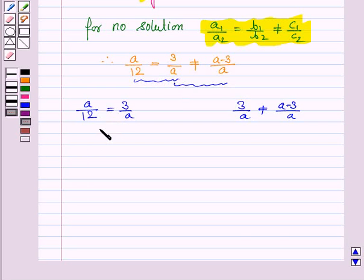Now from this, cross multiplying we have A squared is equal to 12 into 3 that is 36, and from this we have 3A not equal to A into A minus 3.